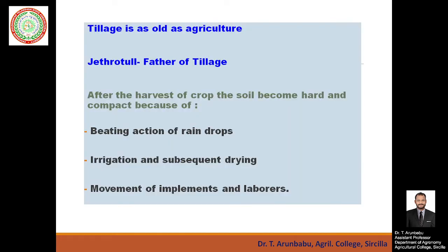Tillage is not a new practice — it is as old as agriculture. After harvest of the crop, the soil becomes hard and compact because of the beating action of raindrops, which separates soil particles from soil aggregates and clogs the soil pores, causing the soil surface to harden. Other reasons include irrigation and subsequent drying, and movement of implements and laborers.